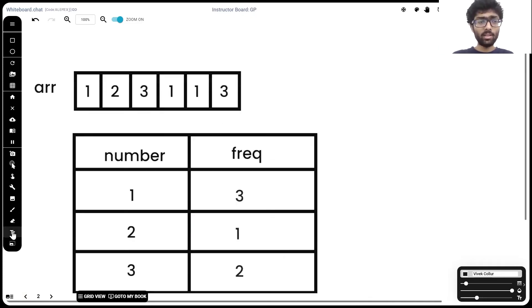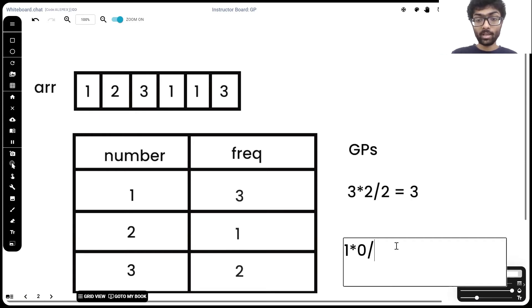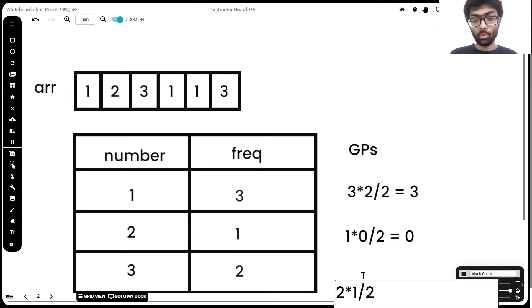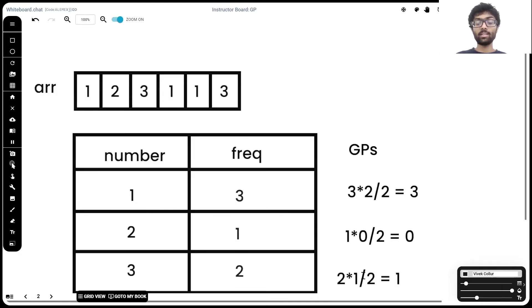Now that we've calculated the frequency, let's add a third column called good pairs. We'll call it GPS. So we've established the formula is n into n minus one by two. Here we know n is three. So that's going to be three into two by two, which is three good pairs. So one forms three good pairs. All the ones in the array form three good pairs. One into zero by two, which is zero. Naturally, two forms zero good pairs because it has nothing to pair with. There's a single two in the answer. Finally, three forms two into one by two good pairs, which is nothing but a single good pair.